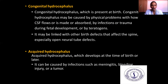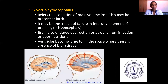Acquired hydrocephalus develops at the time of birth or later and can be caused by infections such as meningitis, bleeding, injury, or a tumor. Ex vacuo hydrocephalus is a condition of brain volume loss, possibly present at birth due to failure in fetal brain development, or resulting from brain atrophy due to infection or poor nutrition. The ventricles become enlarged to fill the space where brain tissue is absent.